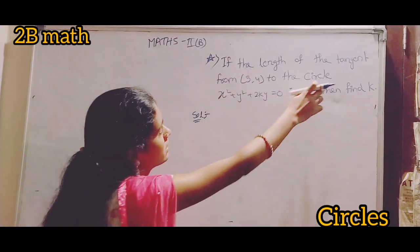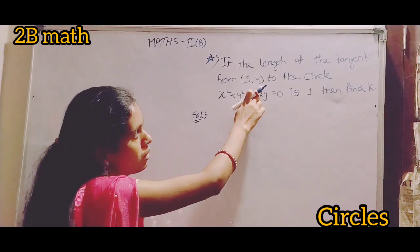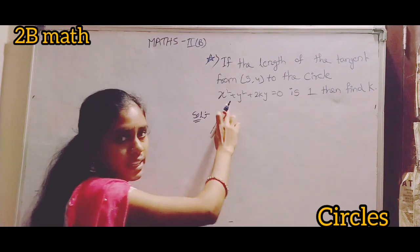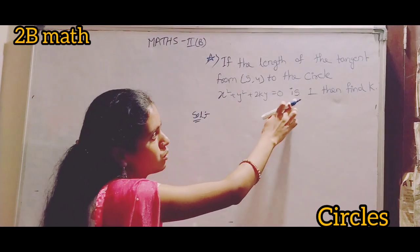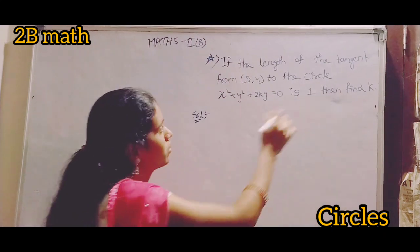If the length of the tangent from (5,4) to the circle x² + y² + 2ky = 0 is 1, then find k value.